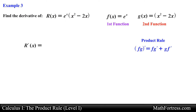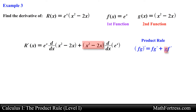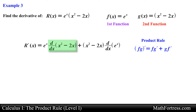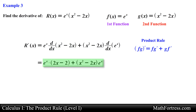Next we find the derivative by applying the product rule. So we take the first function and multiply it by the derivative of the second function, and add the second function multiplied by the derivative of the first function. Notice that in order to take the derivative of g of x we need to apply the sum rule and power rule. Having applied the product rule we go ahead and simplify the expression.